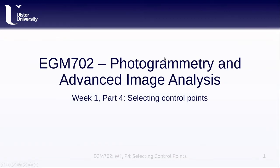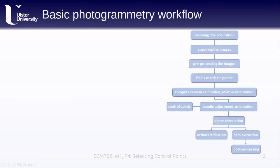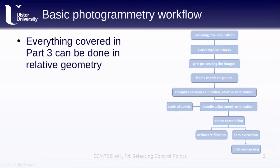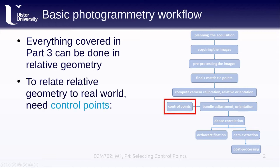Welcome back to EGM 702, Photogrammetry and Advanced Image Analysis. This is Week 1, Part 4: Selecting Control Points. Everything covered in Part 3 can be done in the relative geometry — we don't have to worry about the real world at all, we can just use the camera geometries. But if we want to relate that relative geometry to the real world and make real-world measurements with our images, then we're going to need control points.